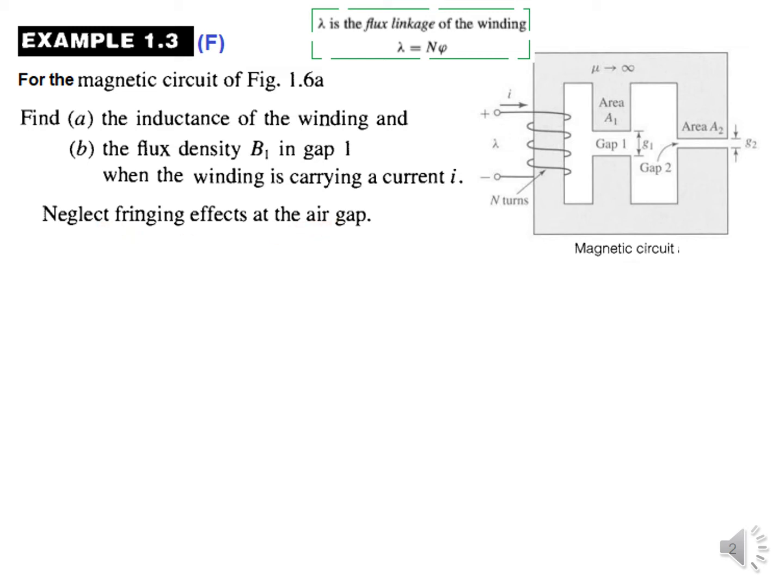Now what is fringing effect? Let's try to understand. When the flux crosses the air gap, there is a tendency of it to bulge outside, and therefore the area of cross section here is more than the area of cross section here.